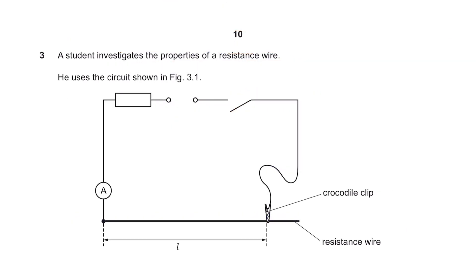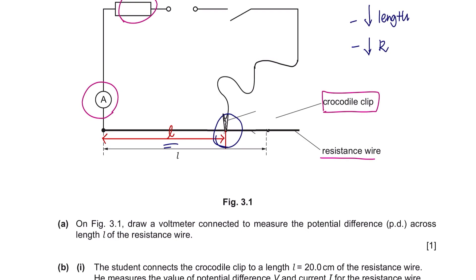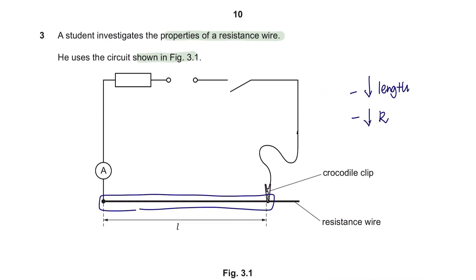Question 3. A student investigates the properties of a resistance wire. He uses the circuit shown in figure 3.1. We have here a power supply, an ammeter to measure current, a resistance wire, and a crocodile clip, which can vary the length of the resistance. So, if you place the crocodile clip at this position, you are reducing the length that is in the circuit. Therefore, the resistance of the circuit will also reduce. Question A. On figure 3.1, draw a voltmeter connected to measure the potential difference PD across length L of the resistance wire. So, this is your resistance wire, and you should place your voltmeter across the component like this.